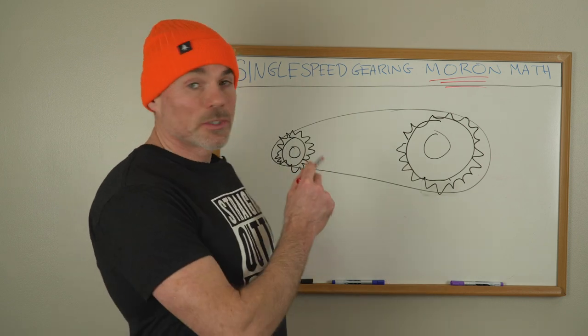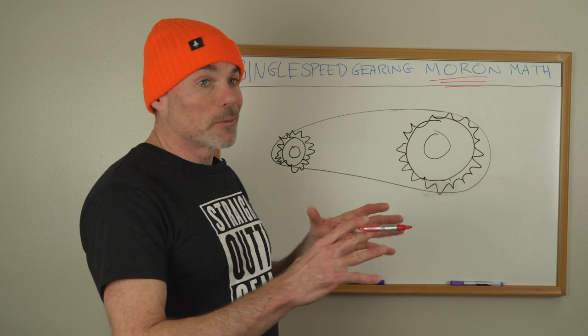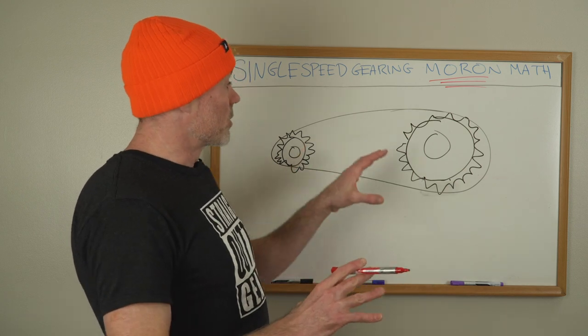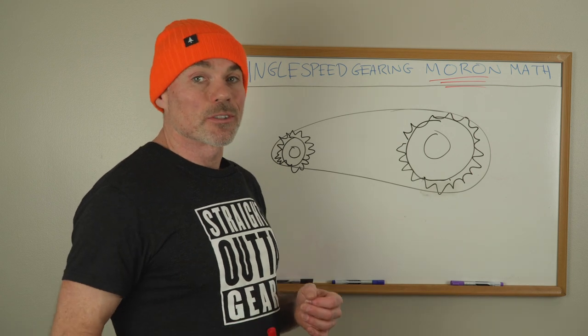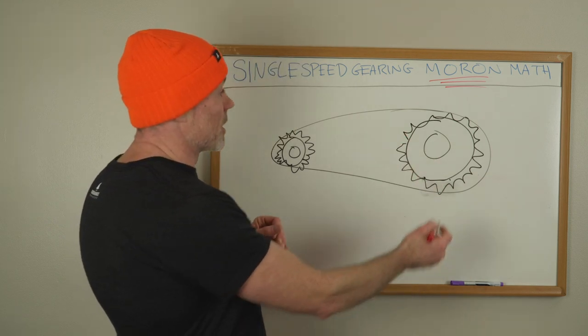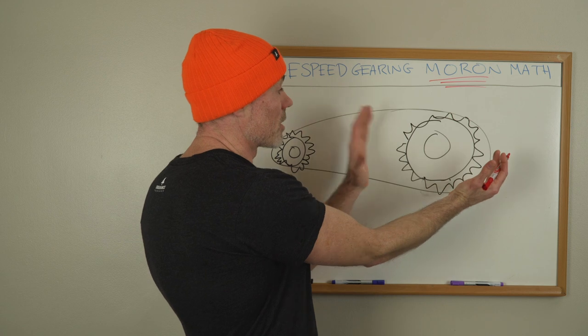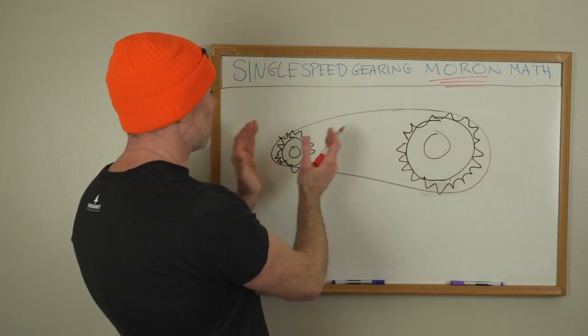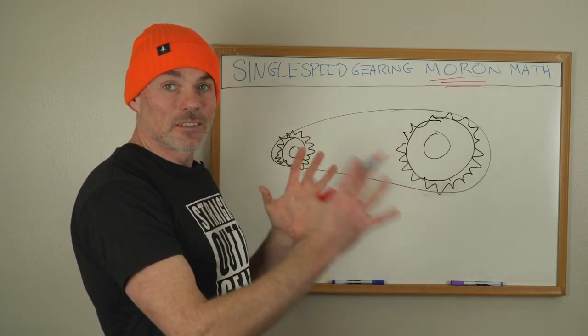That's a drivetrain. That's a single speed drivetrain: one chain ring, one cog, one chain. We will talk more about types of cogs, types of chain rings and more nitpicky nuanced stuff about your drivetrain in the viewer question video which I will post shortly after this video goes up. So stay tuned for that. But for now we're just going to talk about the basics of a drivetrain.